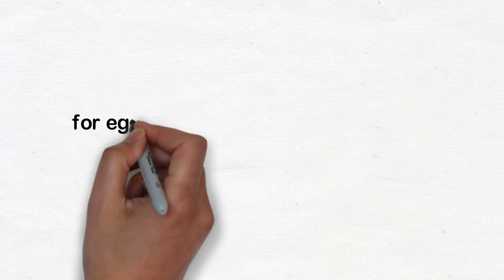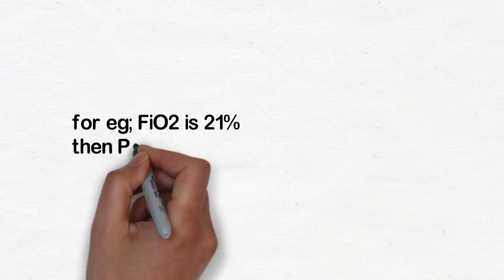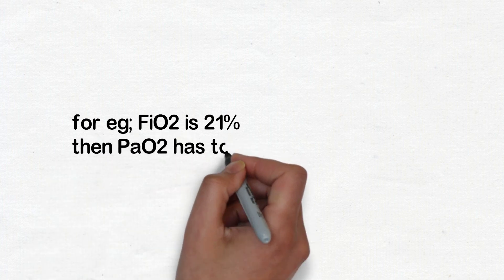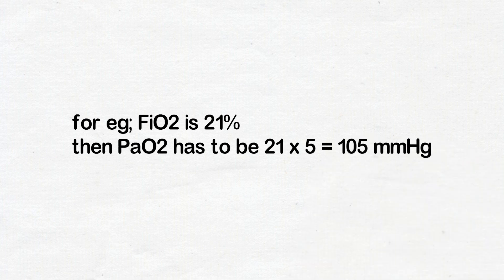For example, in normal atmospheric pressure if FiO2 is 21%, then PaO2 has to be 21 times five, that is 105 mmHg.